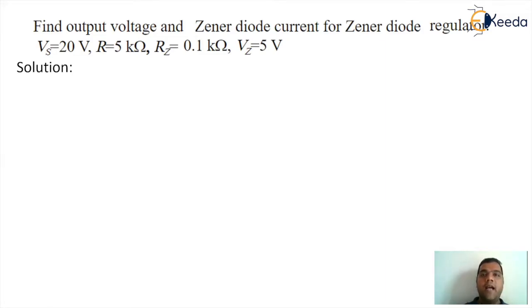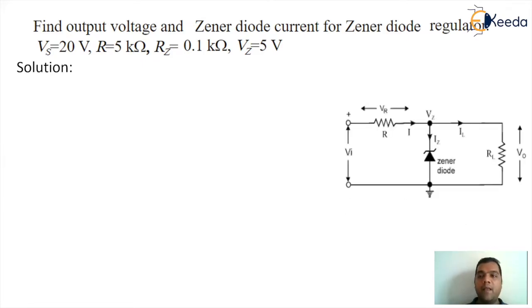Find output voltage and Zener diode current for Zener diode regulator with source voltage of 20 volt, R 5 kilo ohm, resistance of Zener 0.1 kilo ohm, and Zener voltage of 5 volt. So this is the diagram given to us where we have an input source voltage of 20 volt, R value of 5 kilo ohm, resistance of Zener is 0.1 kilo ohm, and Zener voltage is 5 volt.